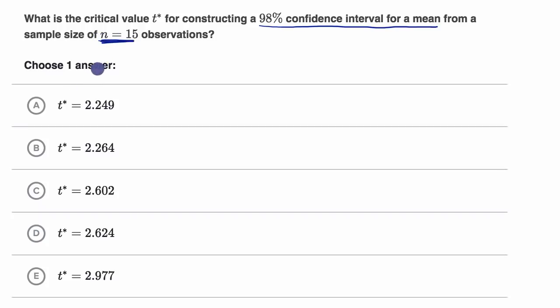So just as a reminder of what's going on here, you have some population. There's a parameter here, let's say it's the population mean. We do not know what this is, so we take a sample. Here we're going to take a sample of 15.